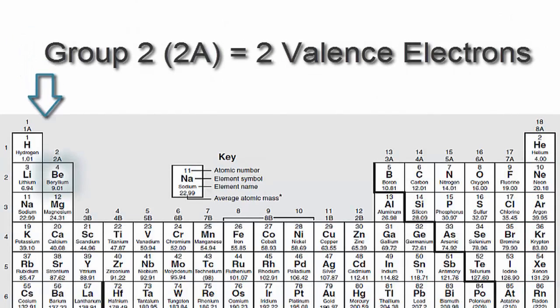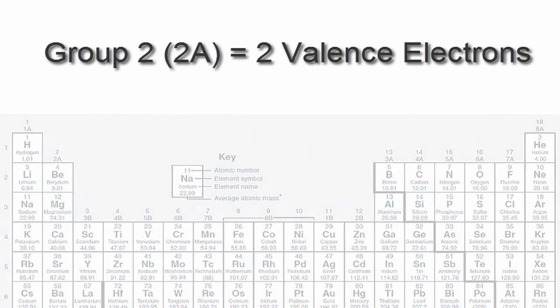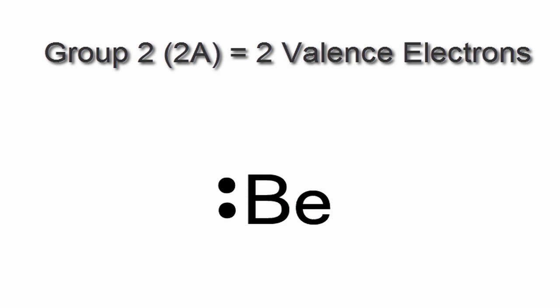So for beryllium, we have two valence electrons. That's because it's in group 2 or 2A. We'll take and put those two valence electrons next to Be, the element symbol for beryllium. And that's it, that's the Lewis dot structure for beryllium.